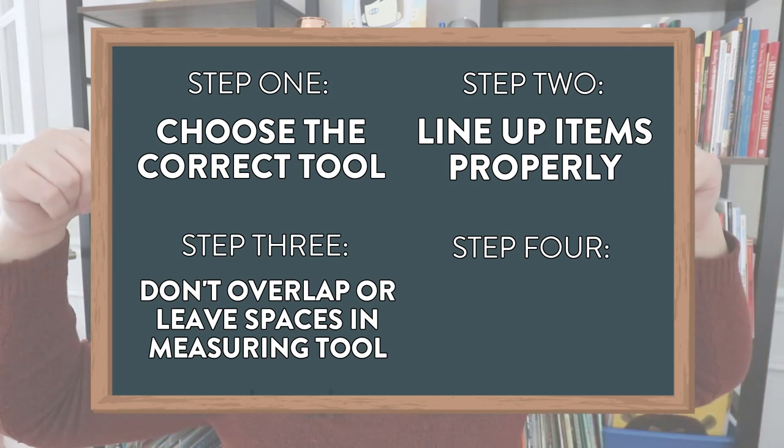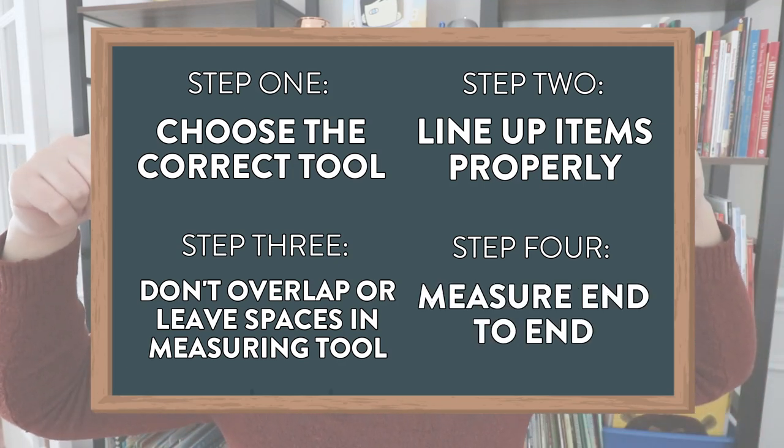The fourth thing is to make sure students measure end-to-end. It's like a process they work through: first pick the tool, second align it up properly, third make sure the items or the measuring tool aren't overlapped and have no gaps, and then go ahead and measure how long, tall, or wide something is from one end all the way to the other. Once you have those four main things in mind, you can make an anchor chart so students know the steps they'll walk through when measuring something.